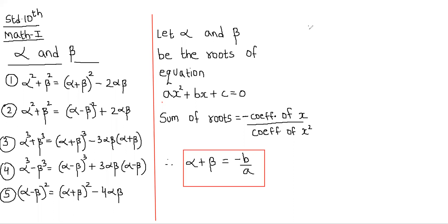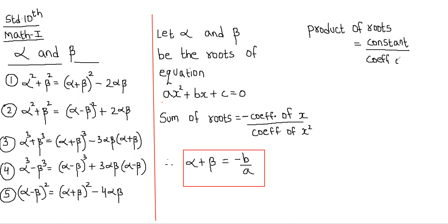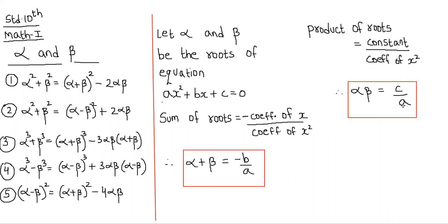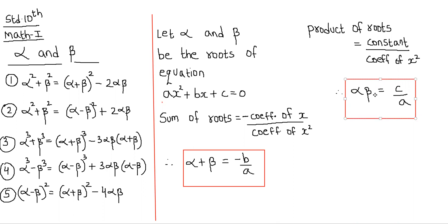The next formula is product of roots equals constant upon coefficient of x squared, giving us alpha into beta equals c upon a. So we have studied five identities of alpha and beta and two formulas: alpha plus beta equals minus b upon a, and alpha into beta equals c upon a.